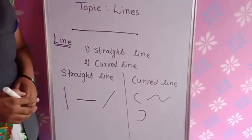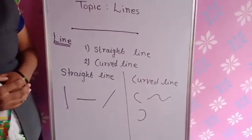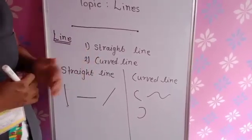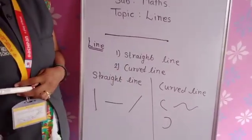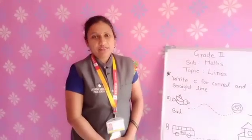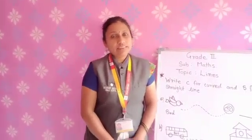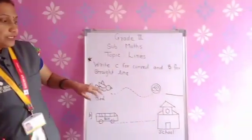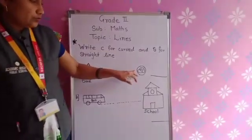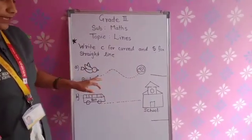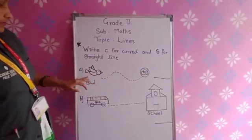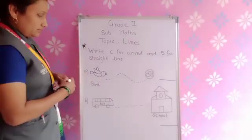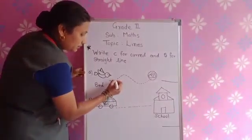Now in the second standard, we are going to learn about the next part of this line. Going further, let's solve one example of these lines. Help this bird to reach its nest — trace the path to guide the bird.